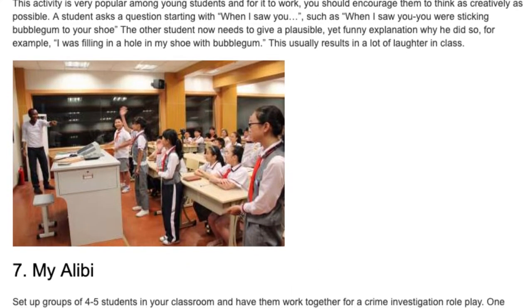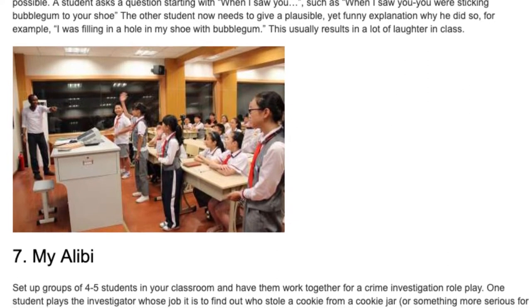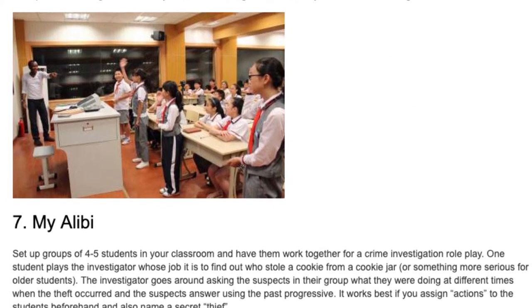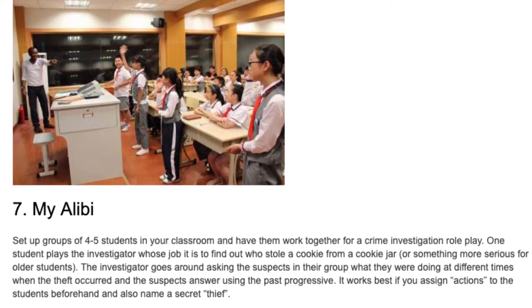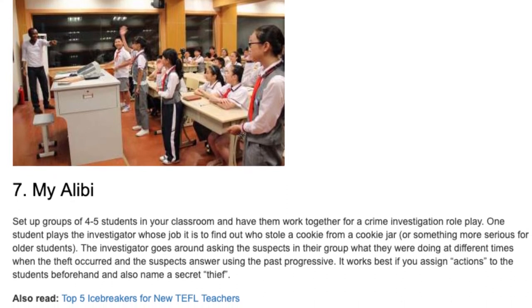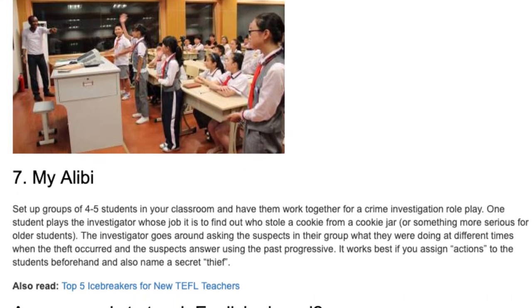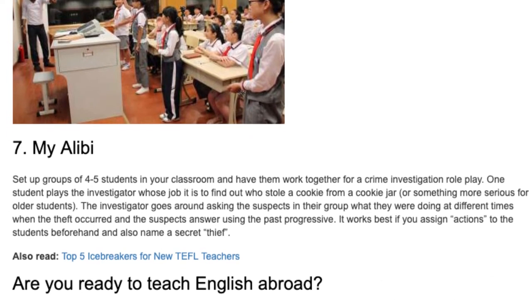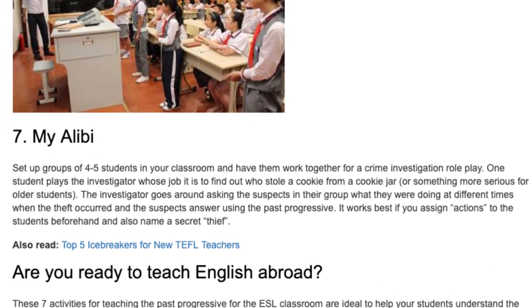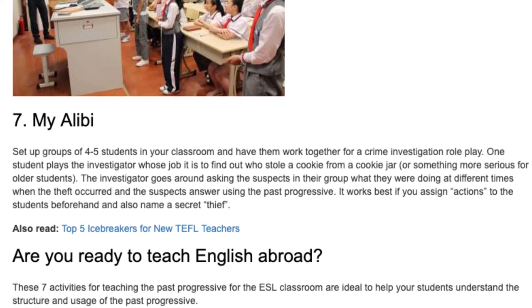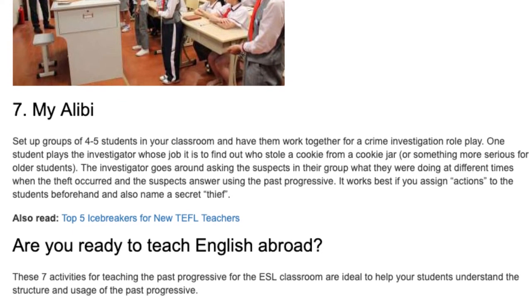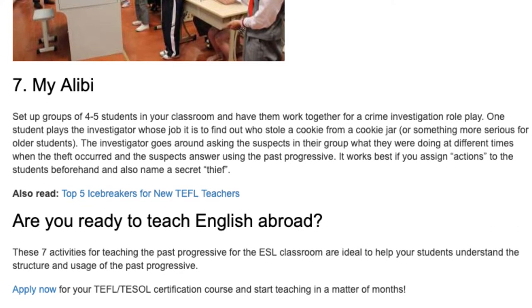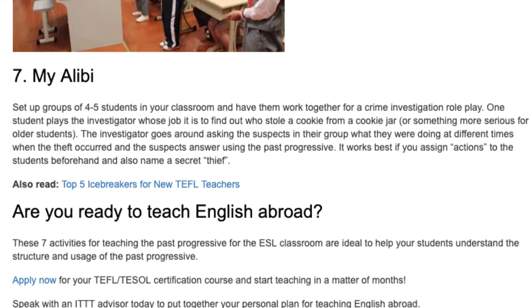Activity 7: My Alibi. Set up groups of four to five students in your classroom and have them work together for a crime investigation role play. One student plays the investigator whose job it is to find out who stole a cookie from a cookie jar, or something more serious for older students. The investigator goes around asking the suspects in their group what they were doing at different times when the theft occurred, and the suspects answer using the past progressive. It works best if you assign actions to the students beforehand and also name a secret thief.